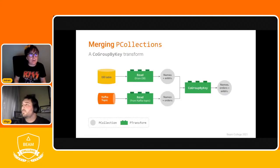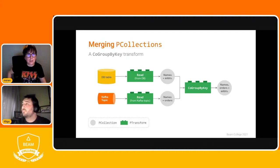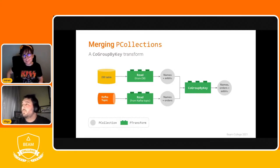For a more tangible example: imagine we have a shop reading customer names and addresses from a database table, and customer orders coming from a Kafka topic. The pipeline uses CoGroupByKey to join both collections because the key — the customer name — is the same. The resulting P-collection is keyed by name and contains, per key, the orders and the addresses belonging to that customer.